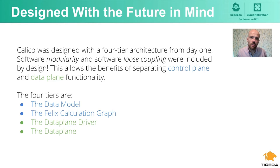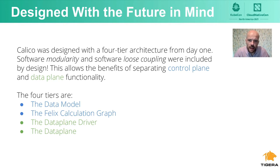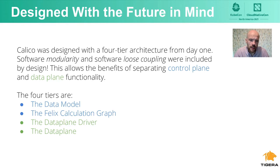Together these concepts make the software easier to fix, troubleshoot, and replace. In the case of Calico, these benefits extend to following the network paradigm of a control plane and a data plane. The control plane elements are the data model, which defines the custom resources, and the Felix calculation graph, which makes the smart decisions. The data plane components are the data plane driver, a simple and minimal driver for programming the data plane, and the data plane itself, which is responsible for actually forwarding packets.